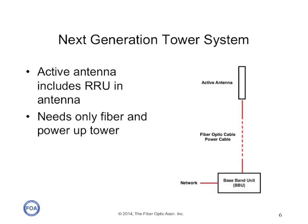The expectation is that in the near future, the antenna will become an active device with a remote radio unit integrated into the antennas. Some towers are already being fitted with antennas like this. With an active antenna, one only needs a fiber copper cable to bring digital signals directly to the antenna and power for the radio unit inside the antenna.